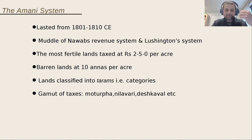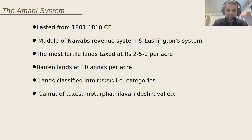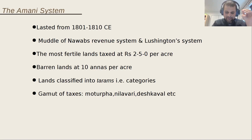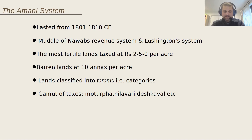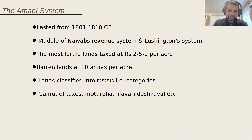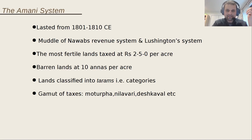The first thing the British did in any area was survey it as well as possible, because they were always apprehensive about losing out on revenue. For wetlands, Lushington did a rough estimate of revenue payable by farmers. For dry lands, he simply used the Nawab's existing classification, and in 1805 he added another category to the existing four. To save on costs, he got farmers from one village to survey the lands of the next village and estimate the revenue, avoiding the expense of hiring an army of peons.